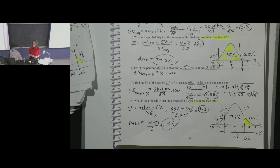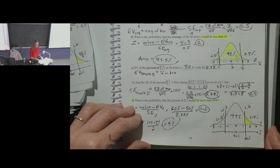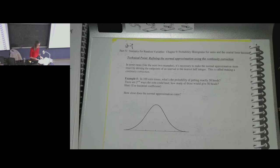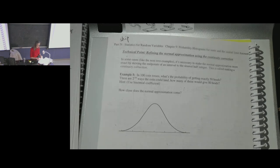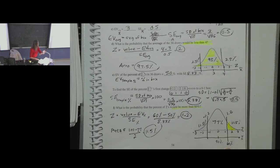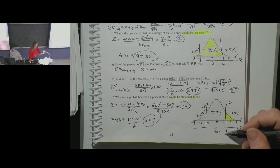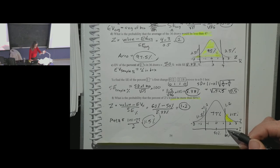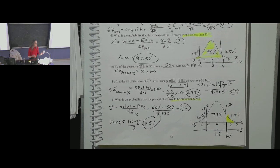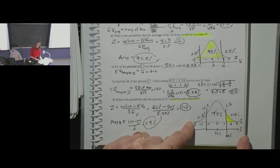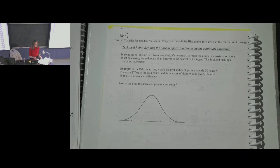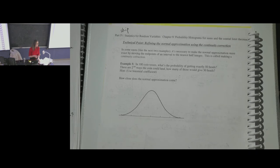A student asked: will there be a chart on the exam? Yes, you'll have the same normal table as in the back of the book. There's also a technique called the continuity correction used when you want an exact value like exactly 60%, rather than an area. You'd turn it into a tiny interval from 59.5 to 60.5. But we're going to skip that for now — it won't be on the exam.